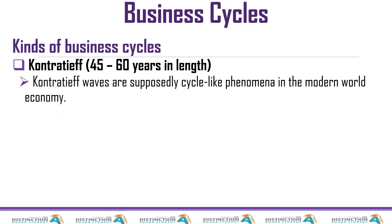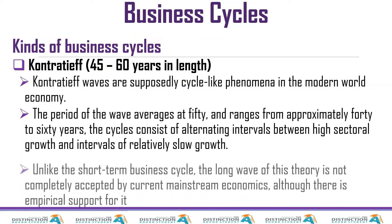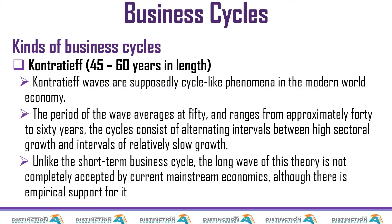Kuznets swings have also been interpreted as infrastructural investment cycles. The last one is the Kondratieff wave — you'll find different spellings in different textbooks. This one takes between 45 and 60 years in length. These are cycle-like phenomena in the modern world economy, with an average period of about 50 years. The cycle consists of alternating intervals of high sectoral growth and relatively slow growth. Unlike short-term business cycles, this long wave is not completely accepted by current mainstream economics, although there is empirical support for it.